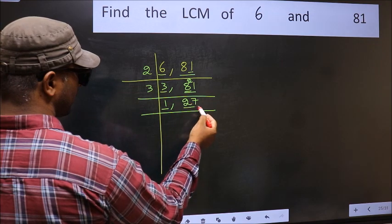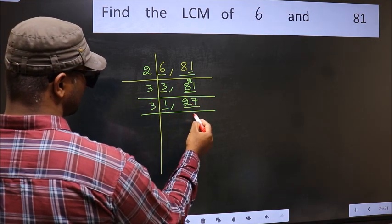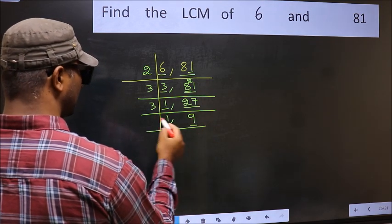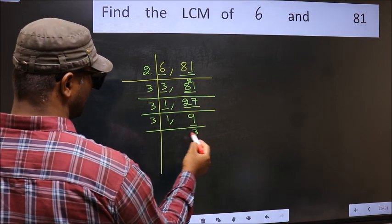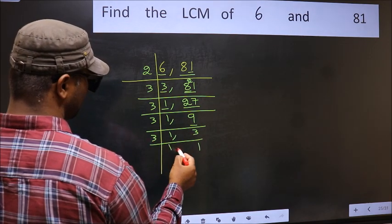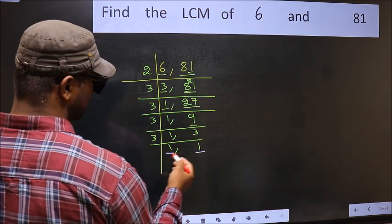Now we got 1 here, so focus on the next number 27. 27 is 3 times 9 equals 27. Now we have 9, which is 3 times 3 equals 9. Now we have 3. 3 is a prime number, so 3 times 1 is 3. We got 1 in both places.